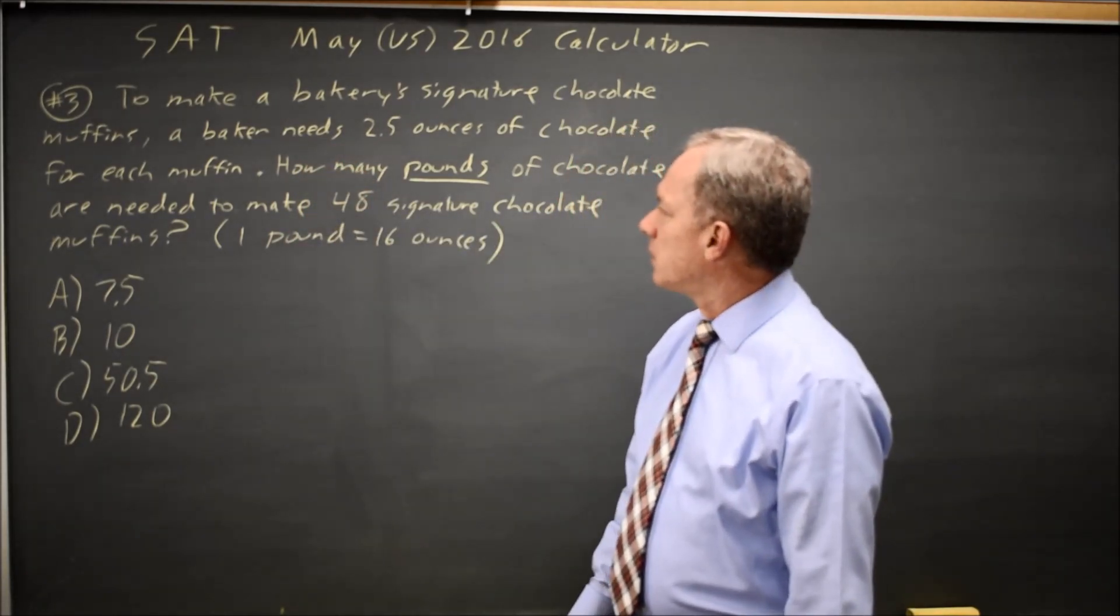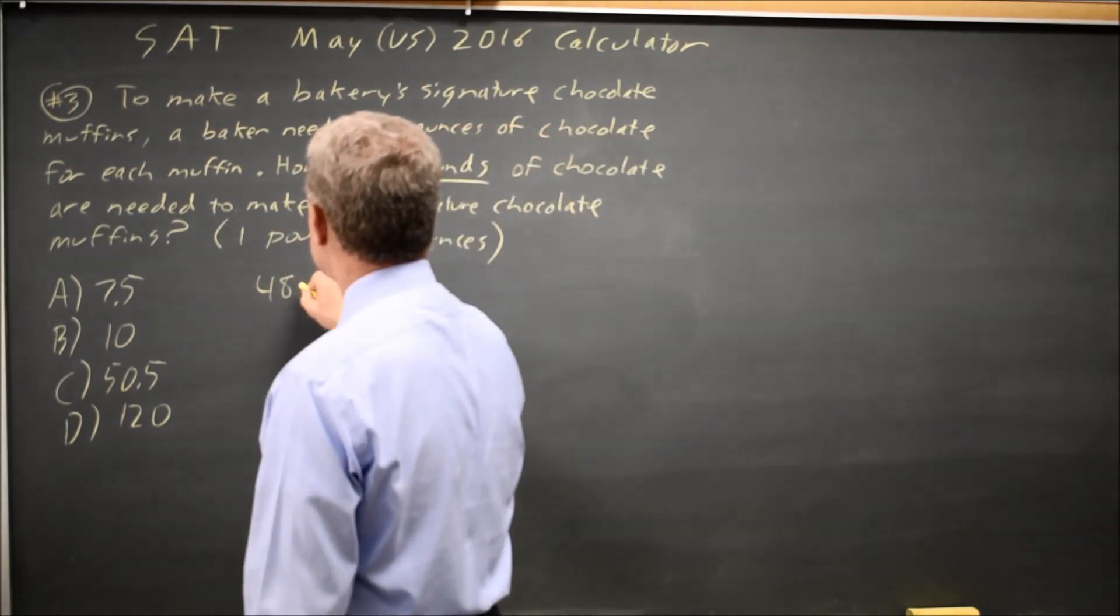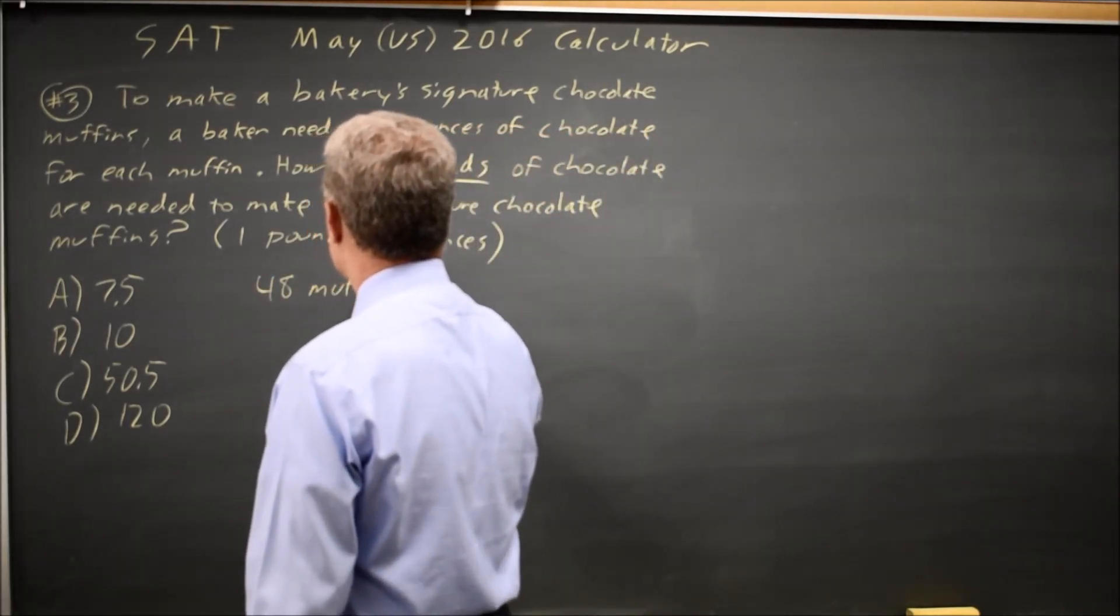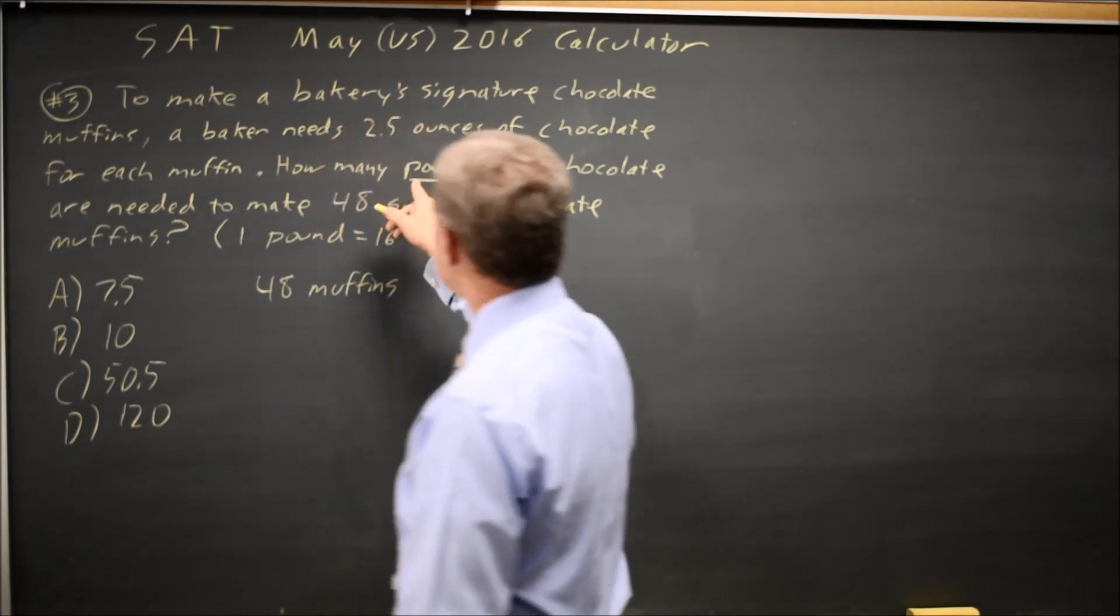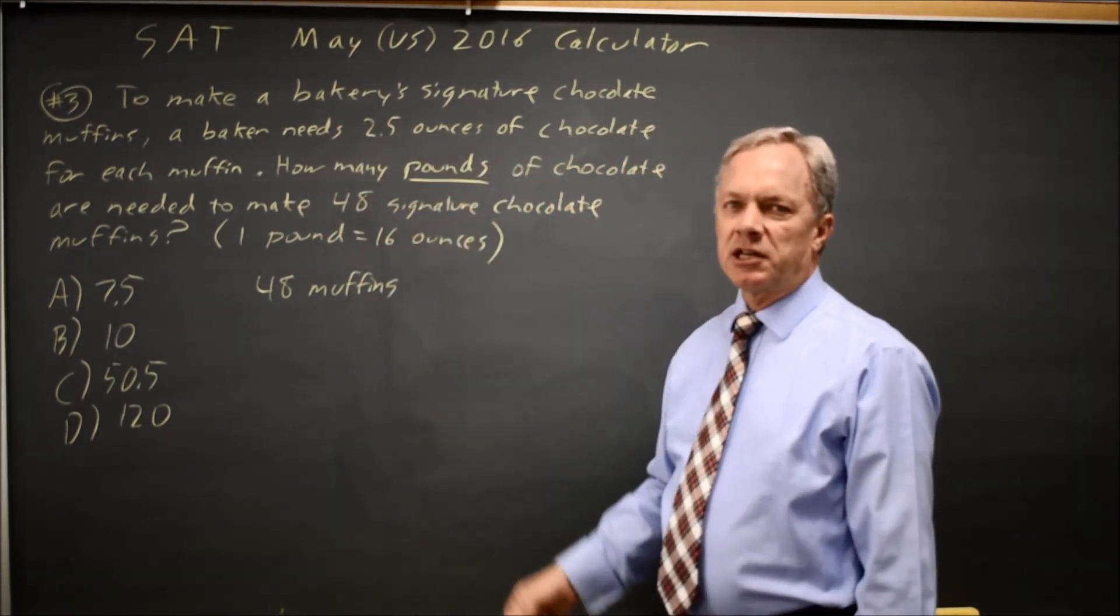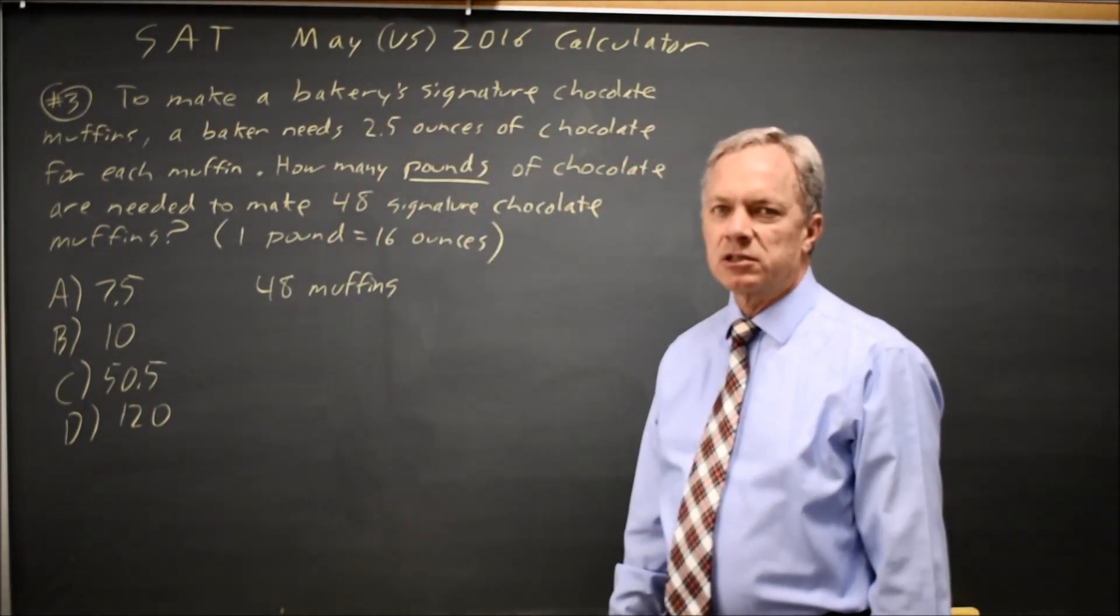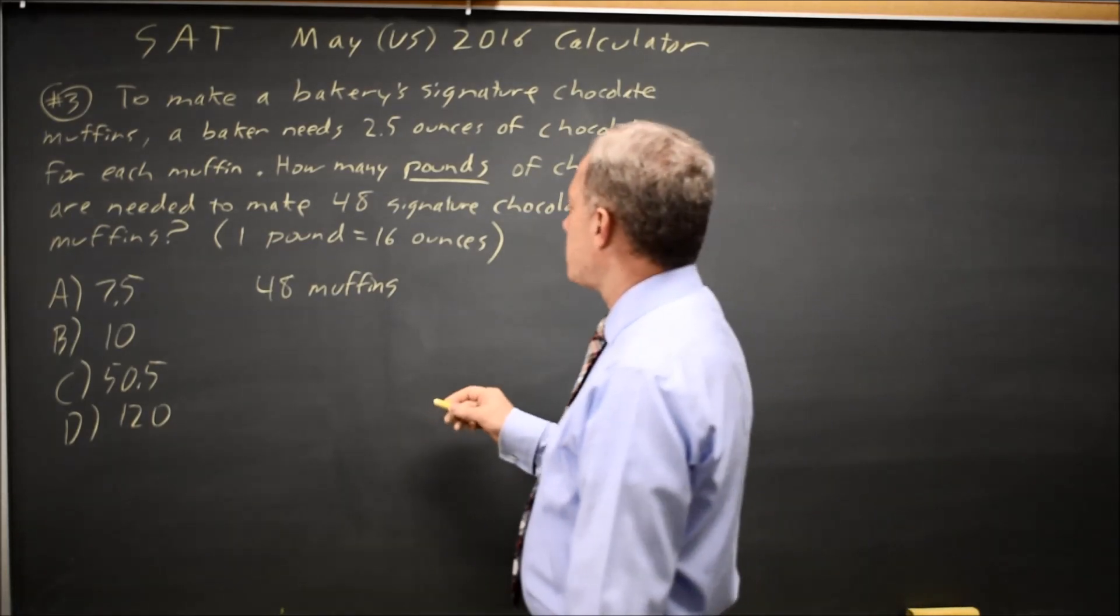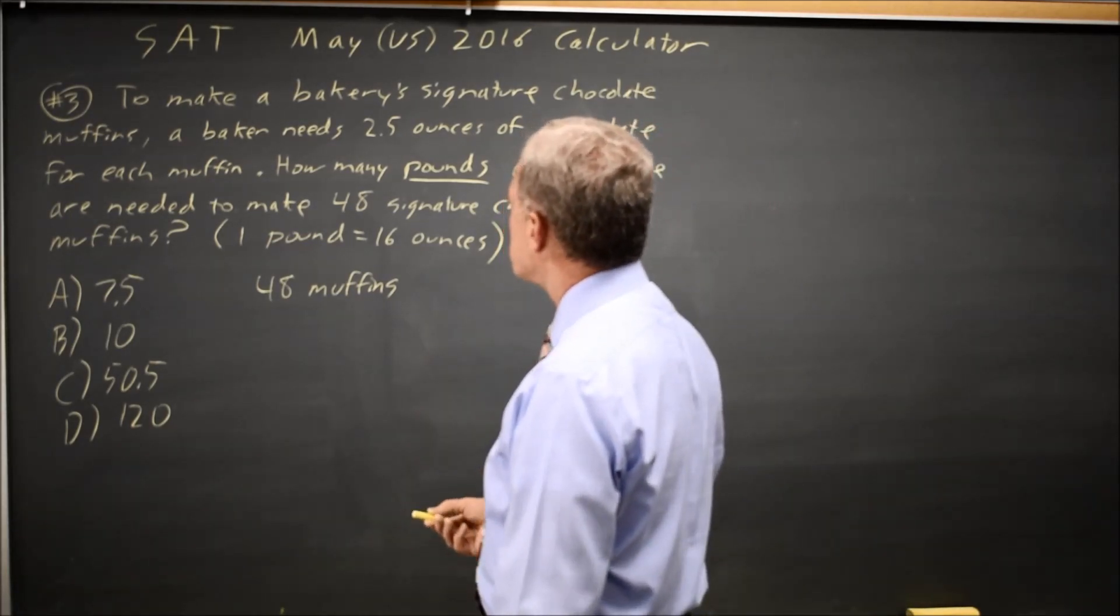College Board gives us a paragraph about making muffins and amount of chocolate needed. The question is, how much chocolate do you need for 48 muffins? And the amount is in pounds. When they underline your units, they're usually testing conversion of units. And I like to multiply by fractions equal to 1.